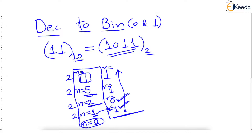In summary: repeat the process of dividing n by 2 continuously. Whatever is the quotient, call it n again, but record the remainders along the way. Once n becomes 0, print all remainders from bottom up. That is the procedure.